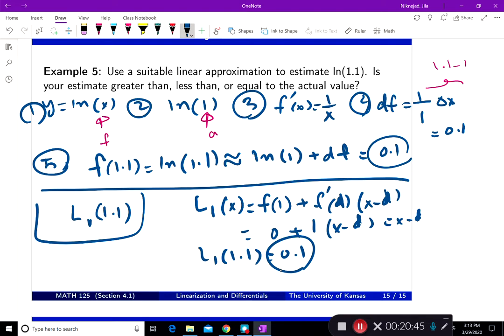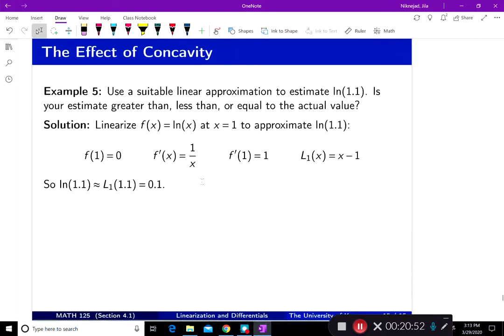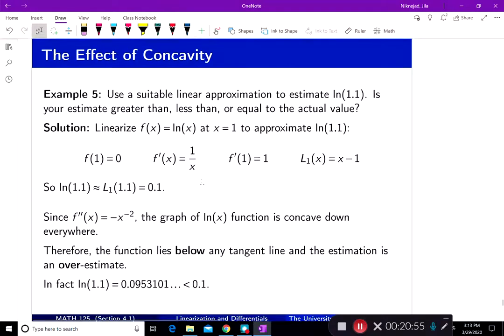Now that we found an approximation, let's figure out whether or not this approximation is an overestimate or an underestimate. To find that, you have to use your second derivative, and second derivative is going to be x to power negative 2. The first derivative is this. Take another derivative of it, you get that. This is basically negative 1 over x squared, and it's always negative value. That means that you always have concave down.